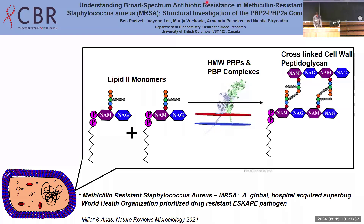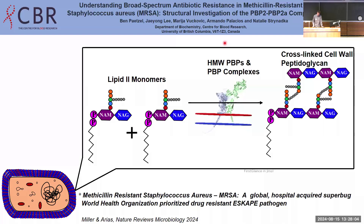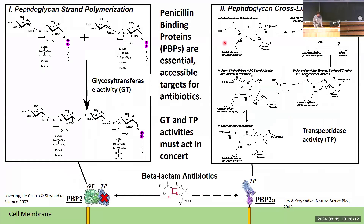My name is Ben Paitzel, and today I'll be presenting the project I've been working on in Dr. Strnadka's lab over the summer: solving the atomic structure of PBP2-PBP2A, a membrane protein complex involved in the formation of peptidoglycan or the bacterial cell wall. It is also recognized as a key factor in conferring broad-spectrum antibiotic resistance to MRSA, or methicillin-resistant Staphylococcus aureus. Peptidoglycan formation comprises two main steps: polymerization of sugar units into linear strands by the glycosyltransferase domain on PBP2, and cross-linking of peptide stems by the transpeptidase domains on both PBP2 and PBP2A.